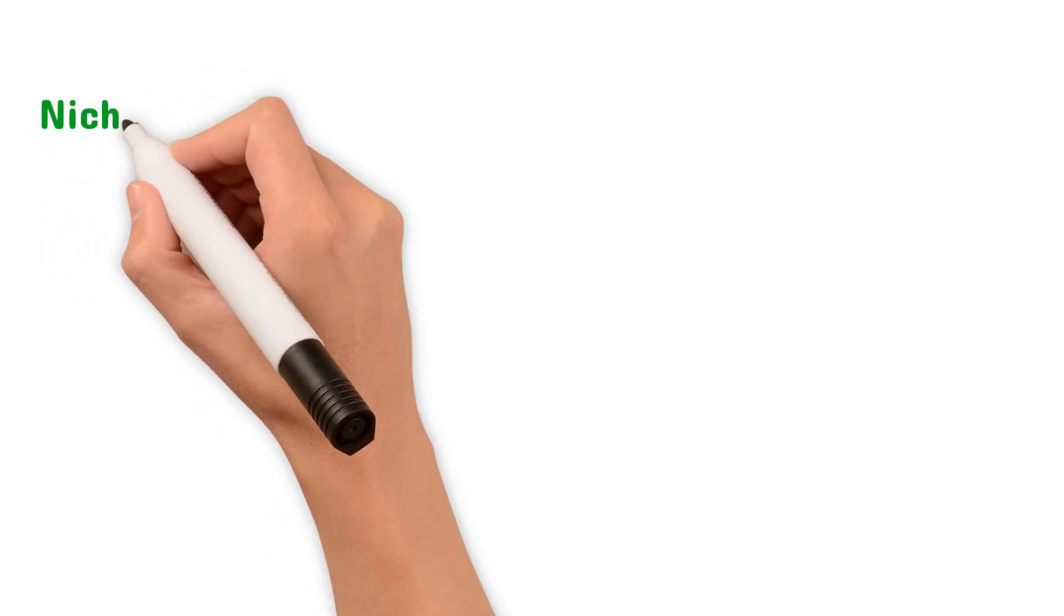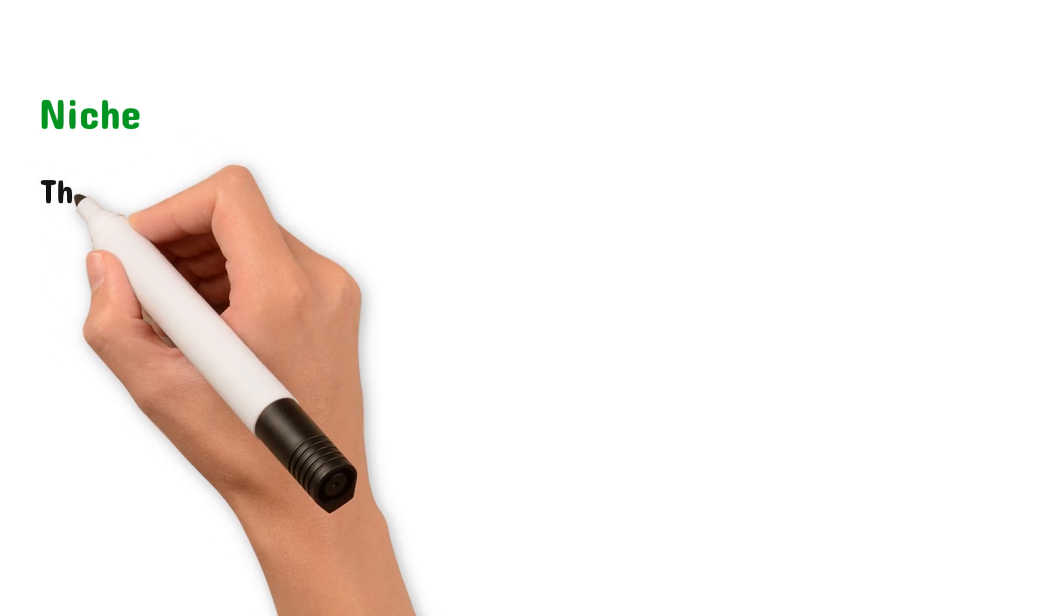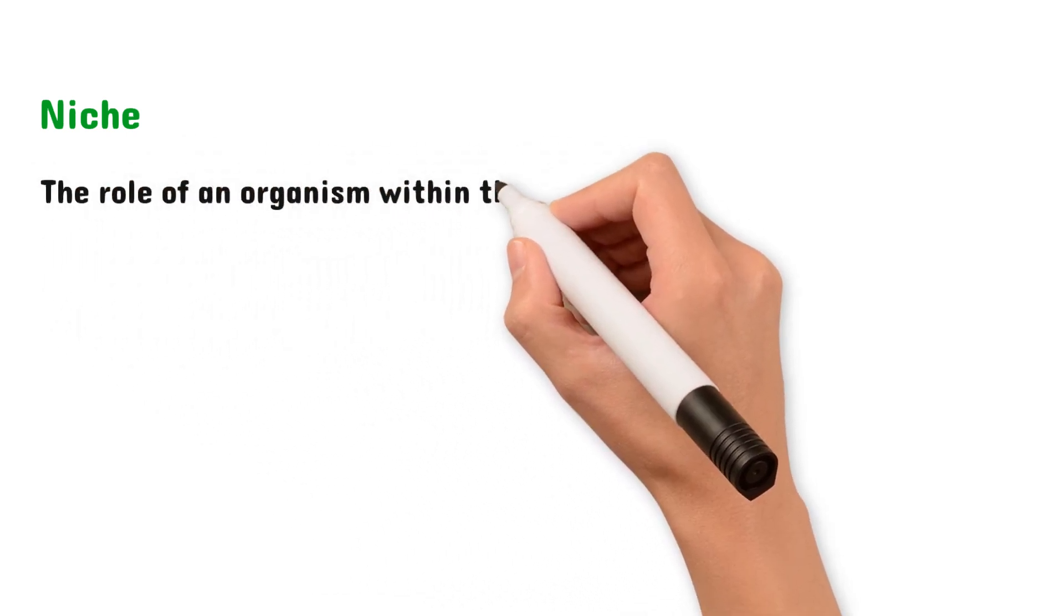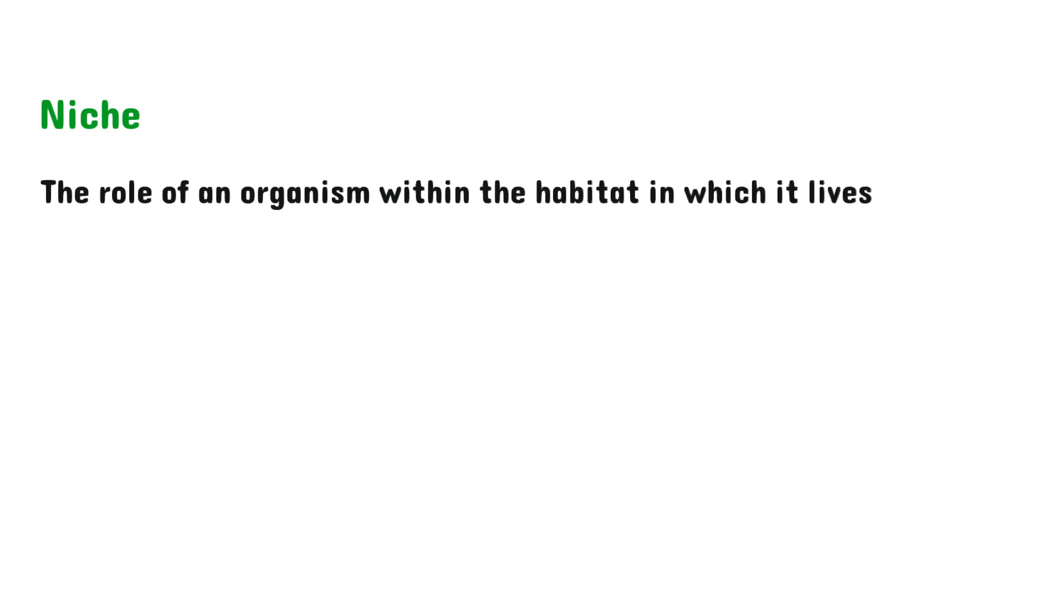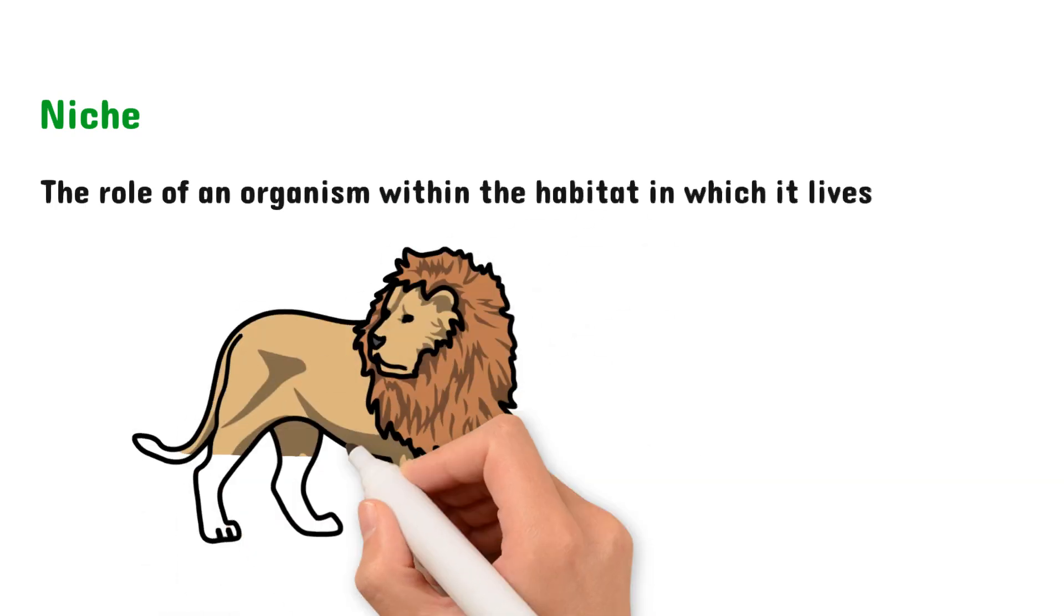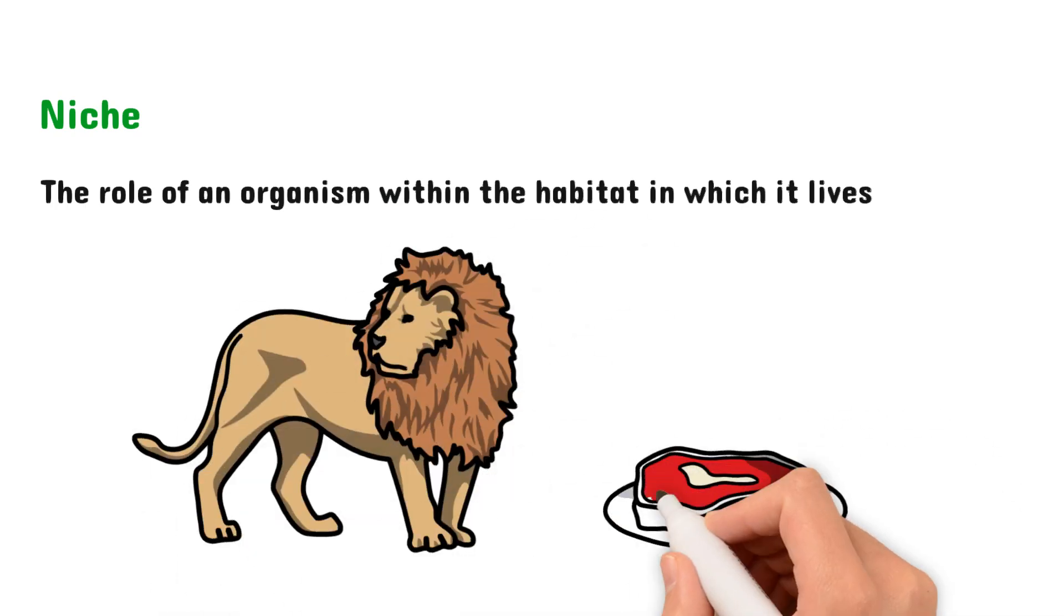Finally, let's look at the term niche. This can be defined as the role of an organism within the habitat in which it lives. So for example, let's take a lion from the savannah. Its role is to eat meat and to be a predator to hunt other animals, so we can say that its niche is being a predator.